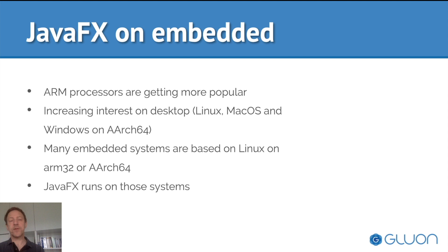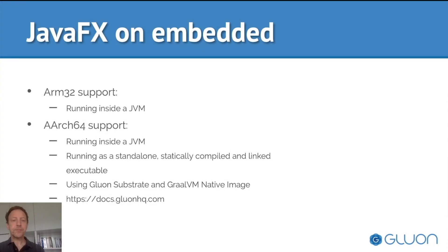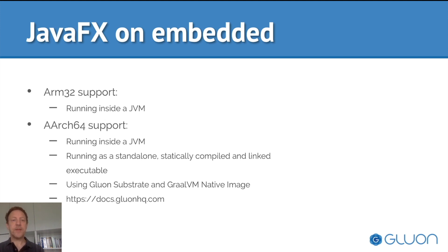When I say the same JavaFX, I refer to the high-level JavaFX APIs used in applications — those are completely the same. If you have an ARM32 system, you can run JavaFX by running the JVM on that system and running the JavaFX application inside the JVM. If you have an ARM64 system, you can do that as well, but you also have the additional capability of running your application as a standalone, statically compiled and linked executable. That is done using Gluon Substrate, which uses GraalVM Native Image to compile Java bytecode to native code, making the application faster, consuming less memory, and starting up immediately.